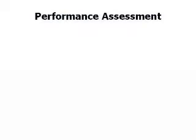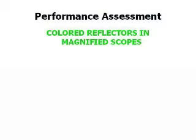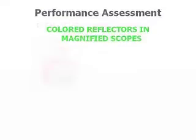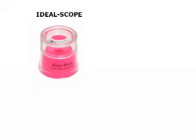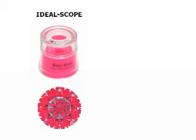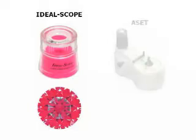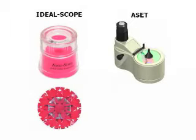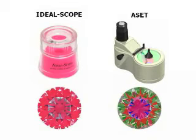In the 1970s, a Japanese scientist named Okuda developed ways to study light performance using colored reflectors in magnified scopes. This method of assessment became popular on the Internet with Gary Holloway's Ideal Scope, a simple magnifying tube containing a red reflector. An Ideal Scope photograph shows what areas of a diamond return light to the viewer's eye and what areas do not. In 2005, the AGS introduced a similar scope, the Angular Spectrum Evaluation Tool. The ASSET shows light return using multiple colors and is used in the AGS cut grading system for round and fancy cuts.